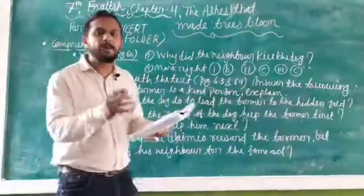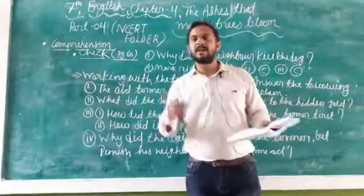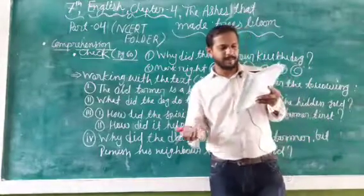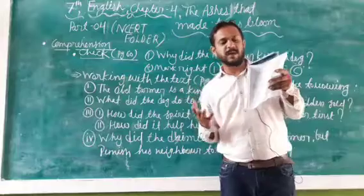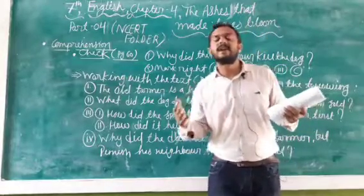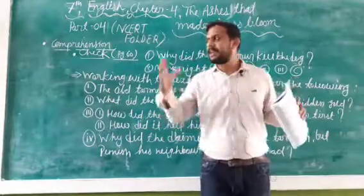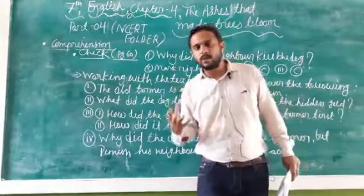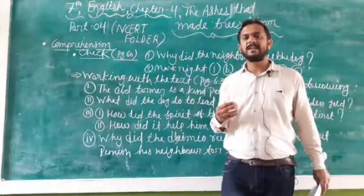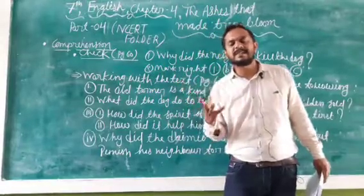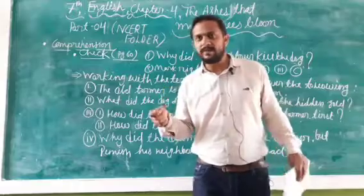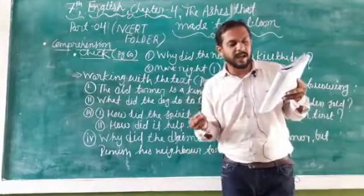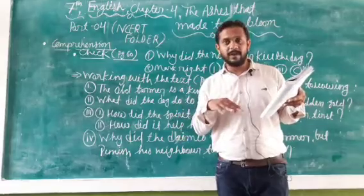Question number two — marking: we have to tick mark. Now we have a good idea about this since we've been studying the lesson for the last three days. Question number one: 'The old farmer and his wife loved the dog.' They loved the dog because they had no children — they were childless. So they kept Mooko as their own child and treated Mooko as their own child. The option 'it helped them in their day-to-day work because the dog helped in the field' is not correct.